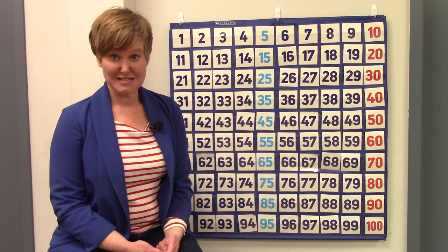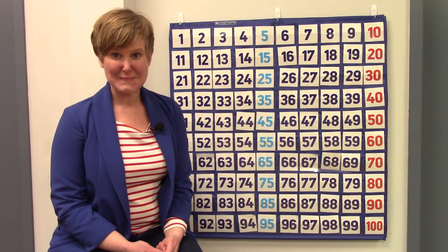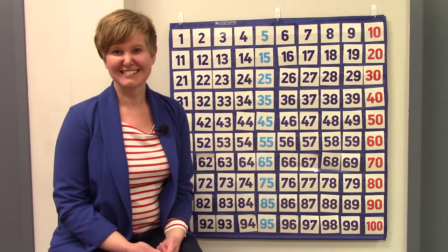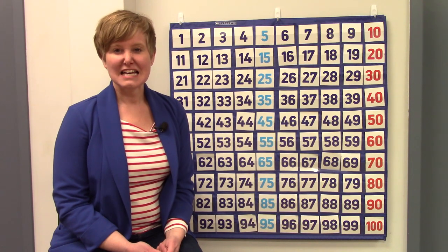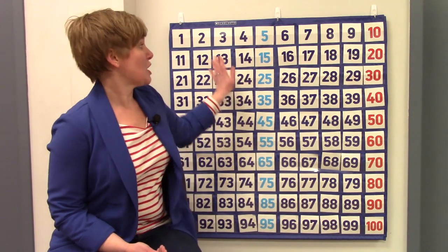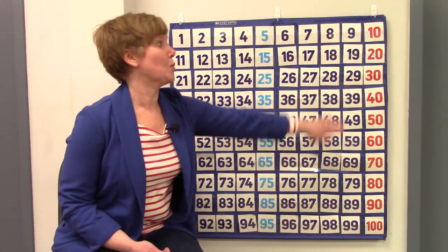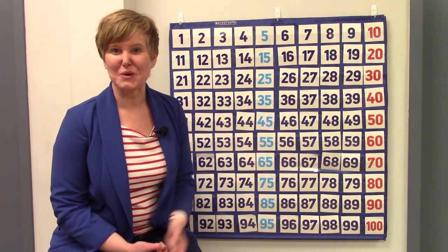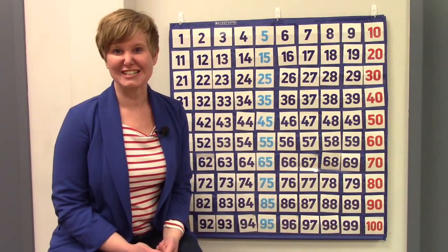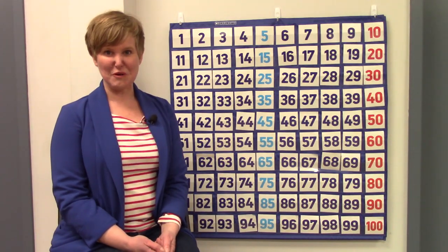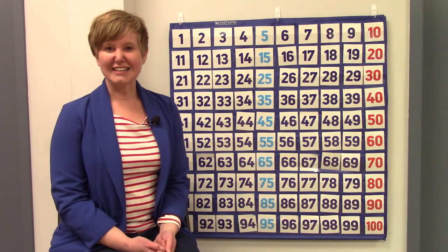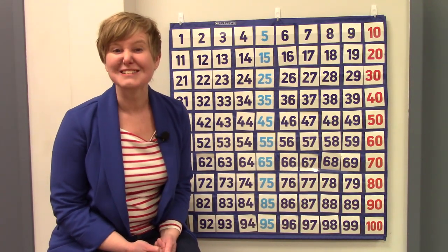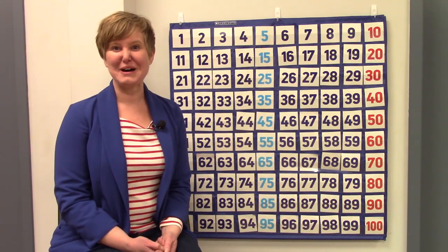What would the next number be? It would be one hundred and ten. Now sometimes we count by one hundred. And we start at one hundred. We've practiced this before. Let's count to one thousand by one hundreds.